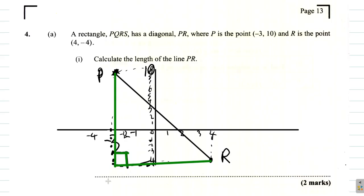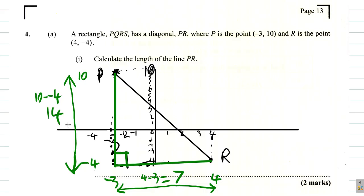From P to R, P lines up with negative 3, R lines up with 4. So this length from here to here is 4 minus negative 3 which is 4 plus 3 which is 7. That's 7. And then going up and down, R is beside negative 4 and P is beside 10. So what is this length running up and down? It's 10 minus negative 4, same as 10 plus 4 which is 14.